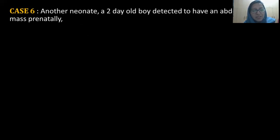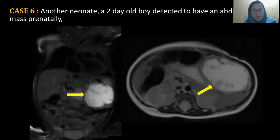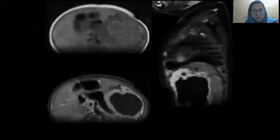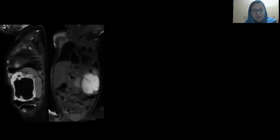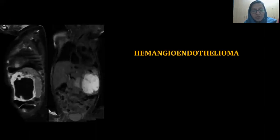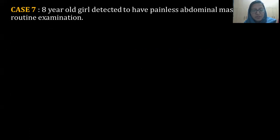Next case: Another neonate, a two-day-old boy detected to have an abdominal mass prenatally. MR imaging showed a thick-walled cystic lesion with solid areas within. On post-contrast, we could see nodular thick enhancement along the periphery with the central area not taking up the contrast. The biopsy revealed hemangioendothelioma, which is the third most common hepatic tumor of children.